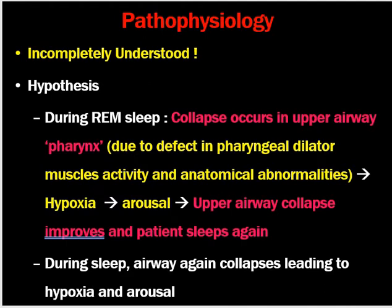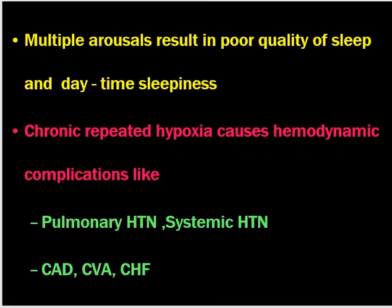The pathophysiology of sleep apnea syndrome is incompletely understood, but the hypothesis is that during REM sleep there is collapse in the upper airway, basically at the level of the pharynx, due to defective pharyngeal dilator muscle activity and anatomical abnormalities. This leads to hypoxia, causing arousal, after which the upper airway collapse improves and the person sleeps again. The cycle repeats, causing multiple arousals, poor quality of sleep, and daytime sleepiness.